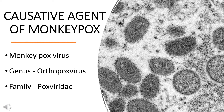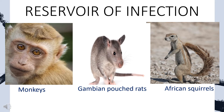Next is the causative agent of monkeypox. The causative agent is monkeypox virus and it is related to the variola virus which caused smallpox. It is a double-stranded DNA virus which belongs to the orthopox virus genus of the poxoviridae family. The reservoir of an infectious agent is the habitat in which the agent normally lives, grows and multiplies. In Africa, evidence of monkeypox virus infection has been found in animals like monkeys, Gambian pouched rats, African tree squirrels and dormice.